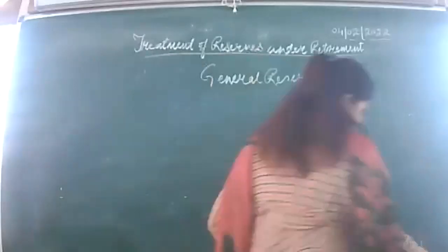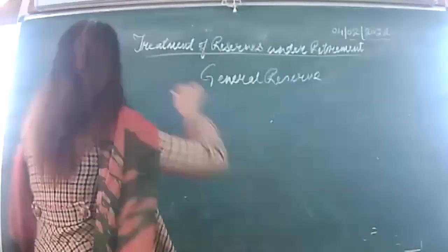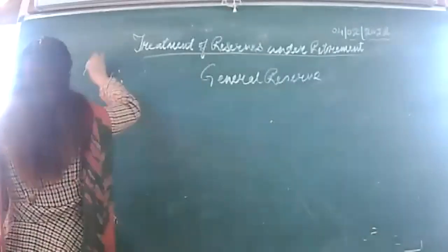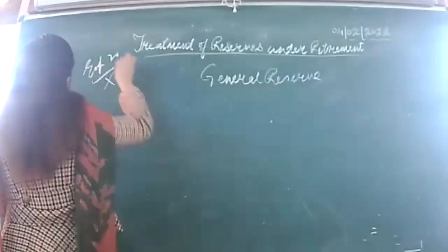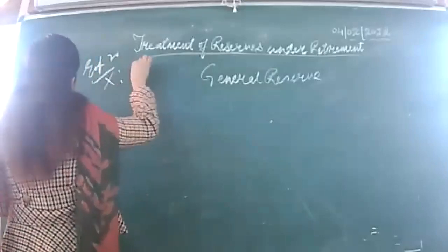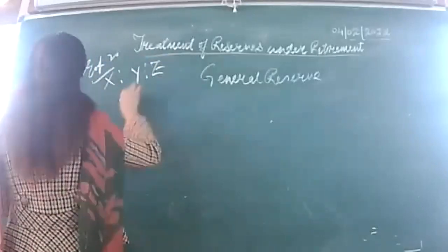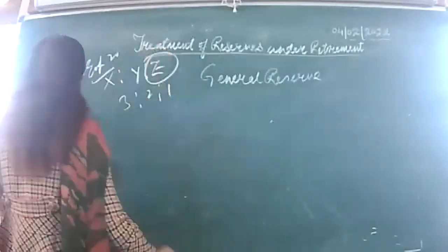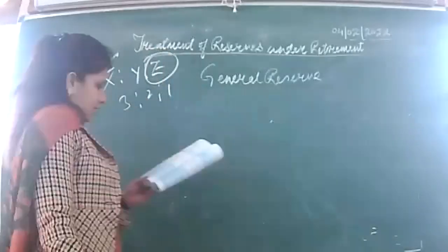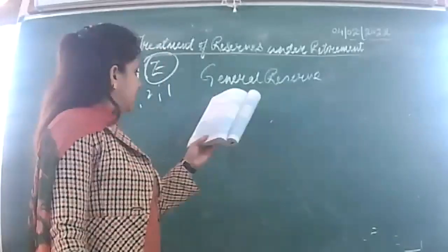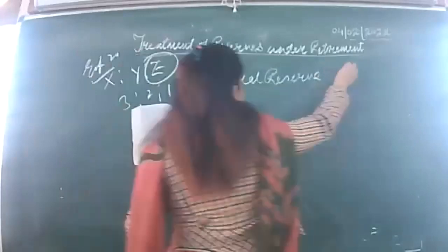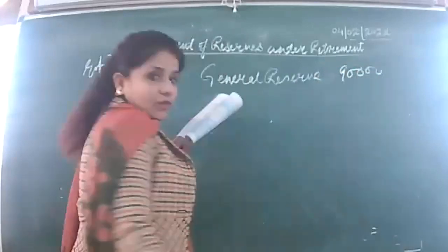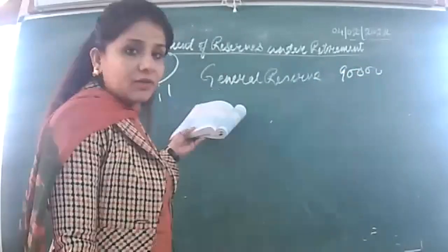In example 20, there is distribution of reserve. We have three partners. This is illustration 20. Y is to Z, ratio is 3:2:1. Z is taking retirement. On Z's retirement, general reserve was 90,000. I am going to distribute it. General reserve account debited to X's capital, Y's capital, Z's capital.